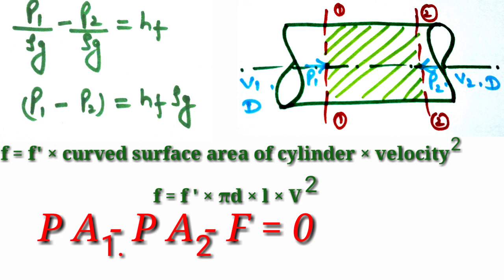Now we consider the force equation. The friction force acting on the fluid is F = F' × area × velocity squared, where F' is the friction resistance per unit area per unit velocity squared. The wetted surface area of the pipe is 2πR·L, and taking diameter D, the area becomes π·D·L. So the friction force is F = F'·π·D·L·V².